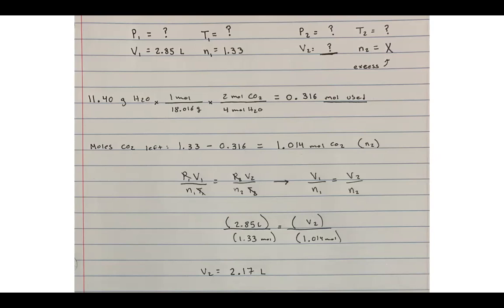This is one of our change problems, so we use our generic expression and cross out anything that doesn't change or we're not told information about. We don't know anything about pressure or temperature, so I cross those out, and my simplified expression is V1/N1 = V2/N2. Plugging in V1 = 2.85 L, N1 = 1.33, and N2 = 1.014, we solve for V2 and find our final volume is 2.17 liters.